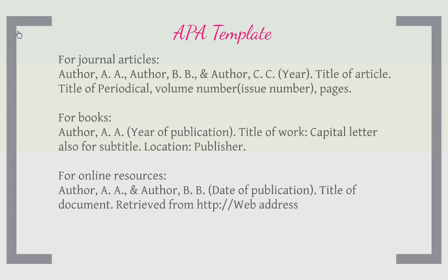To the nitty-gritty: the APA template. There are many more formats than this, but these are the three most popular ones you'll be using. For journal articles, you list the authors first in alphabetical order — last name, comma, then their initials — with a comma between each author. After the last author's initials, put a period. Then in parentheses put the year it was published, followed by a period. After that, write the title of the article — only capitalize the first letter of the first word, and the first letter of any first word after a colon. At the end goes a period. Then list the title of the periodical, the volume number, and the issue number in parentheses, and the pages. The title of the periodical needs to be in italics.